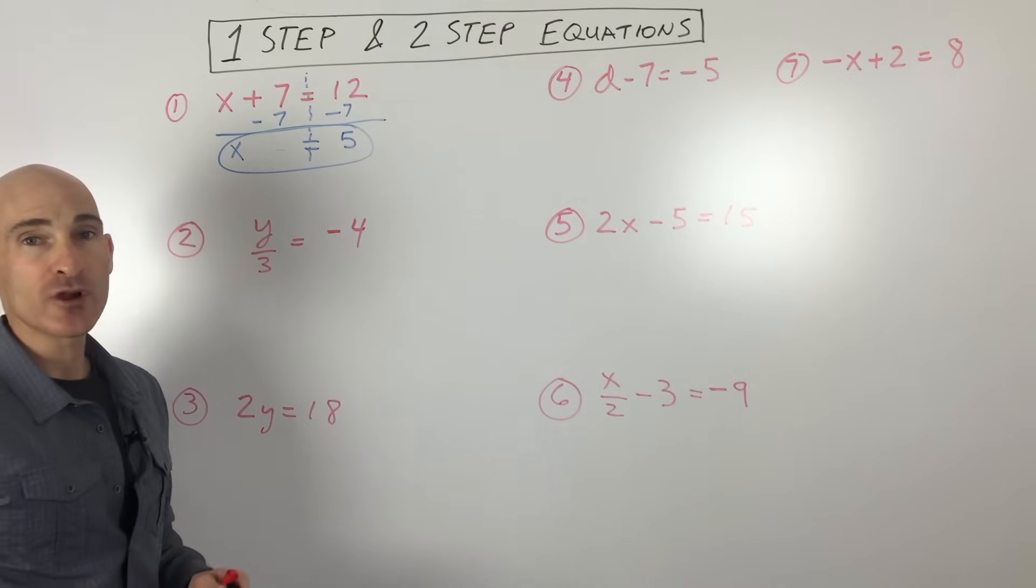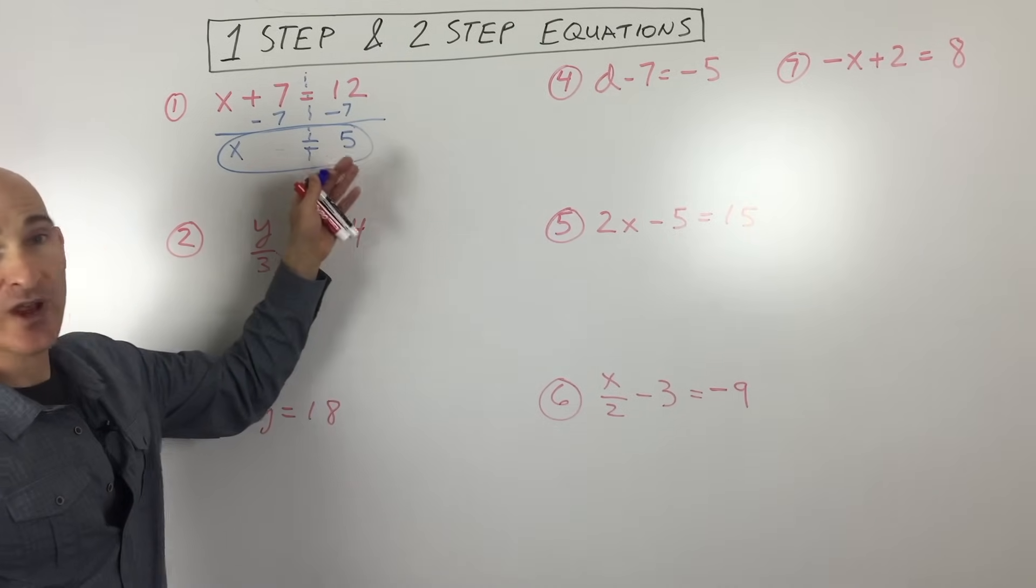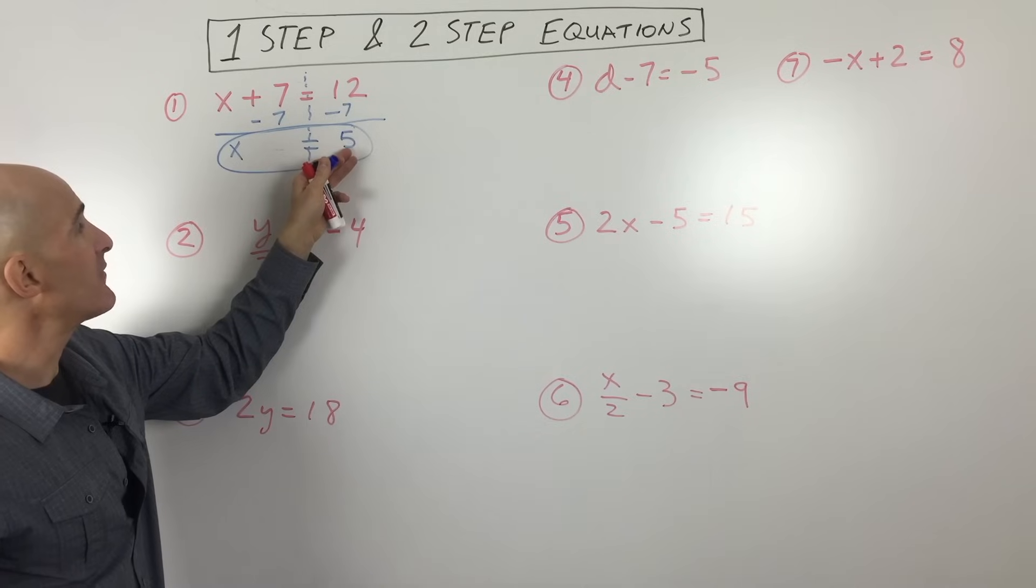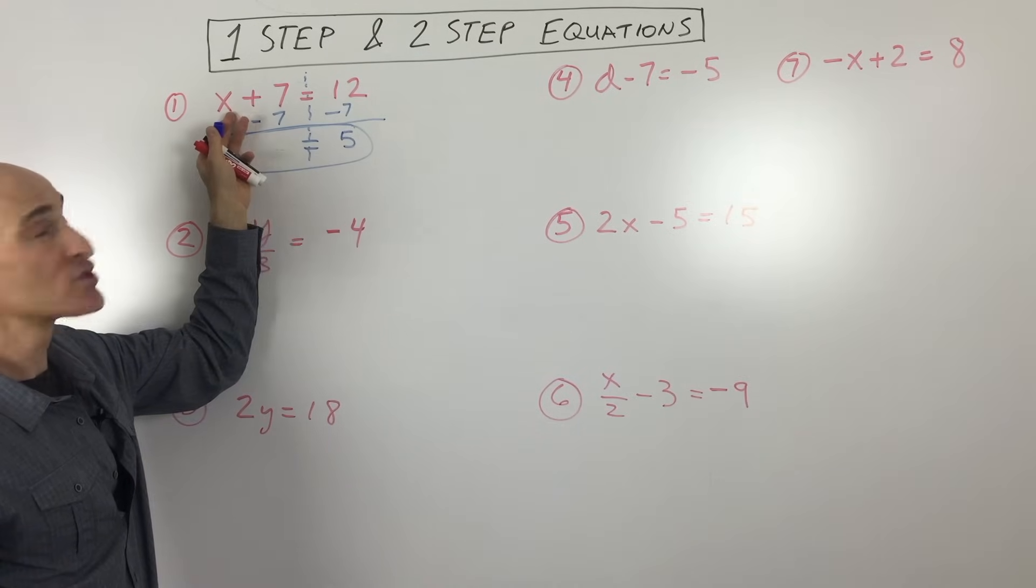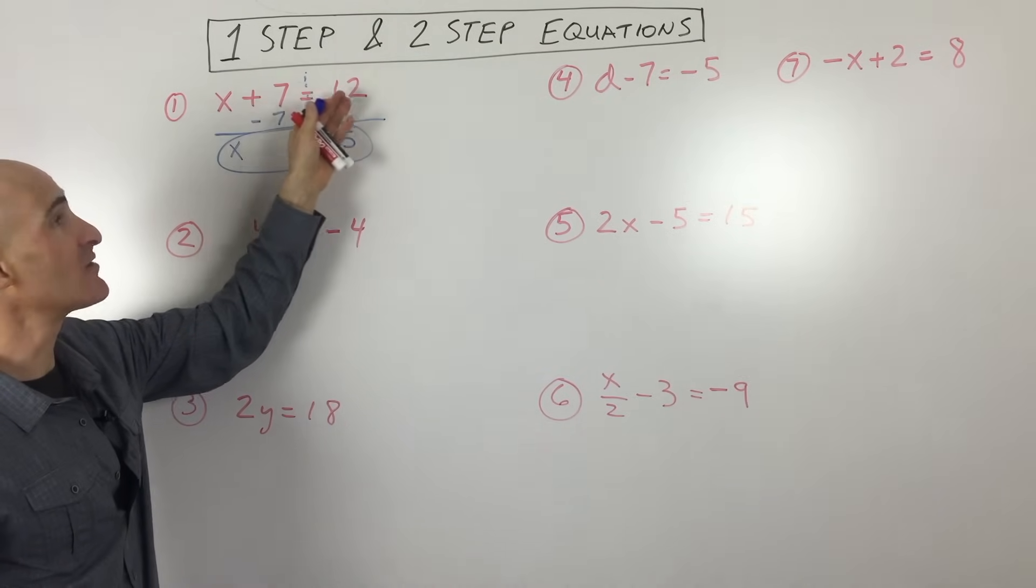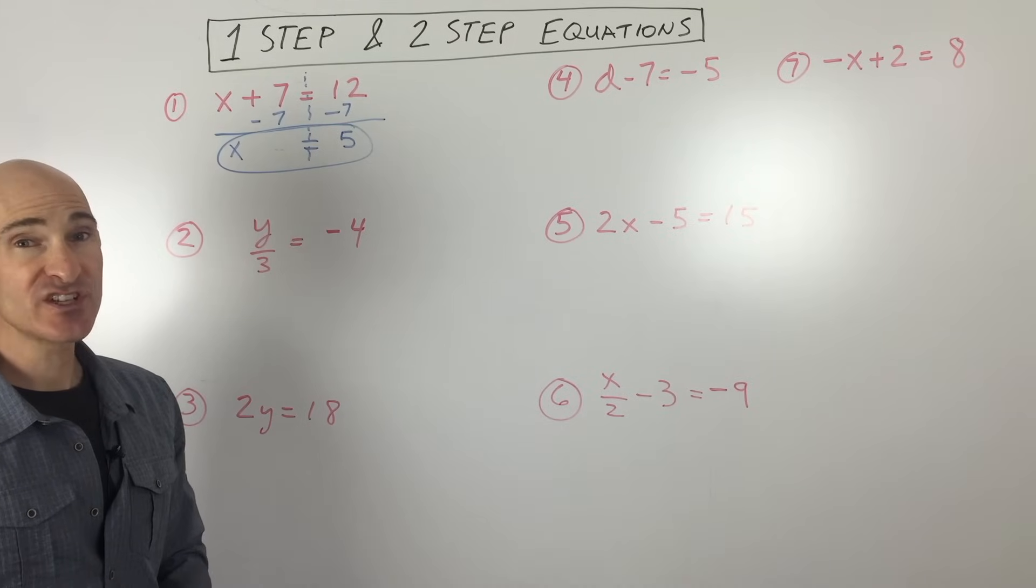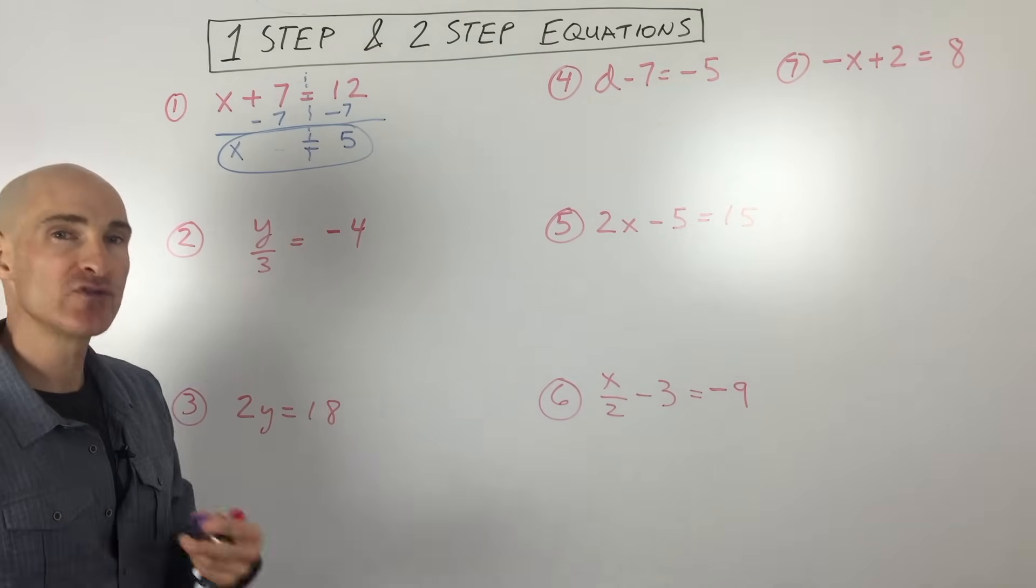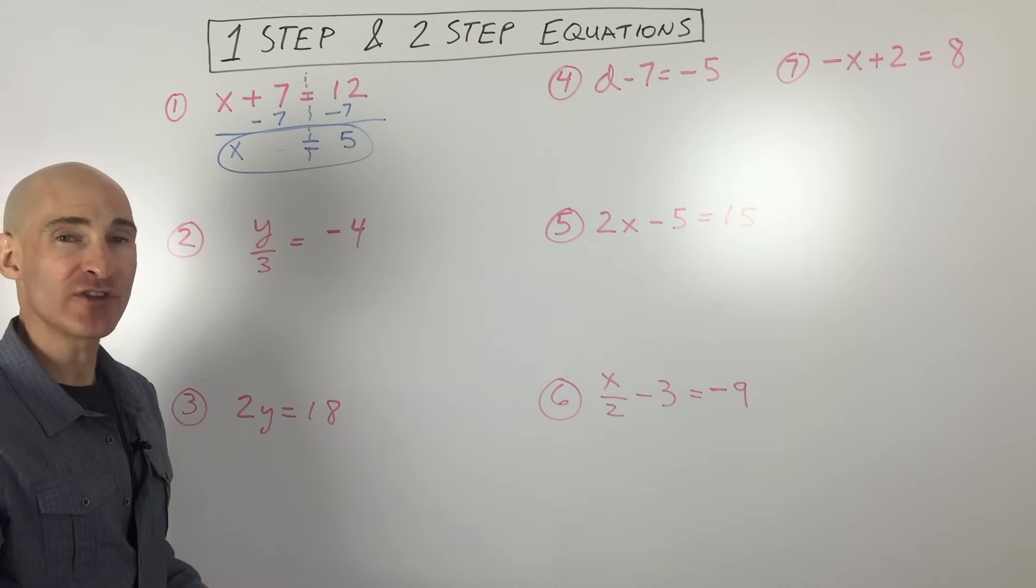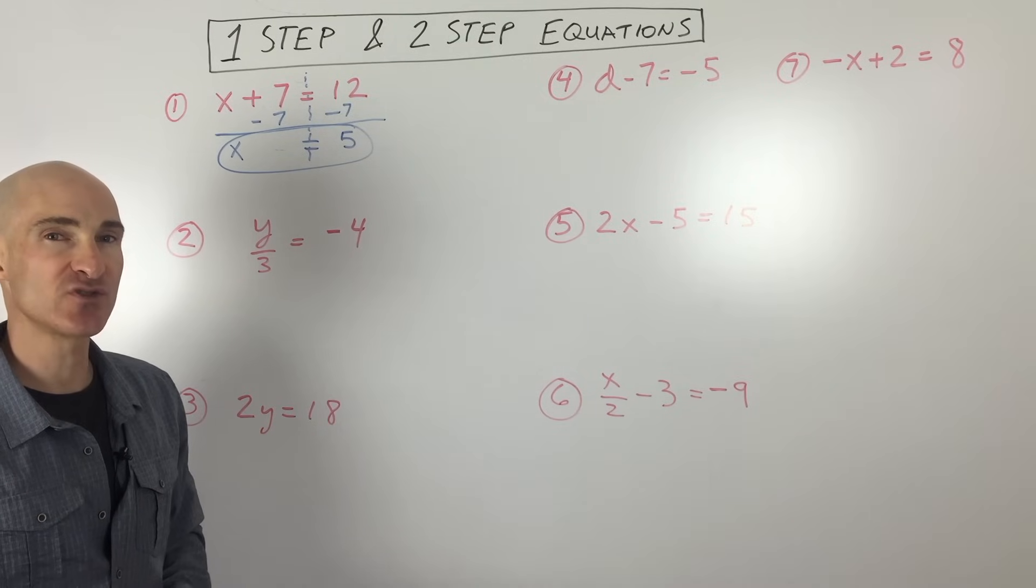If you want to check your work with these one-step equations, or any equation for that matter, go ahead and take that quantity, put it back into the original equation. And you can see 5 plus 7 equals 12. Now, in the beginning, it's easy just to guess what these values are. But we're going through the steps we're learning, because as we get into the multi-step equations, it's going to be harder to guess what those answers are.